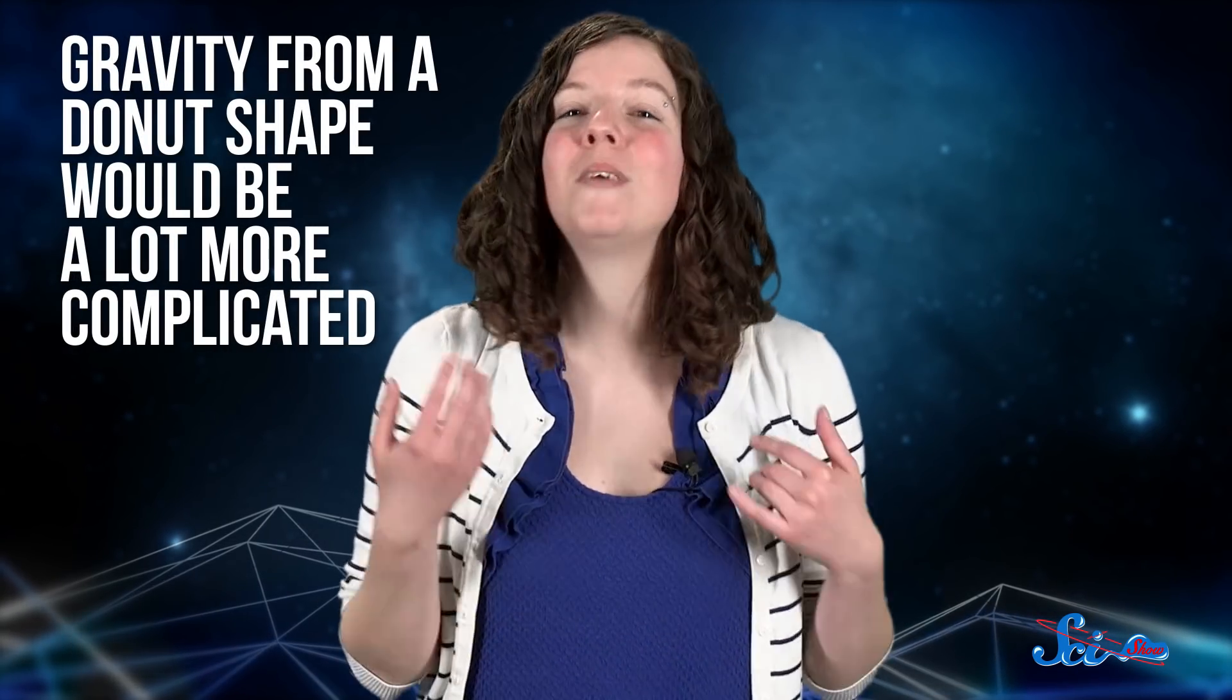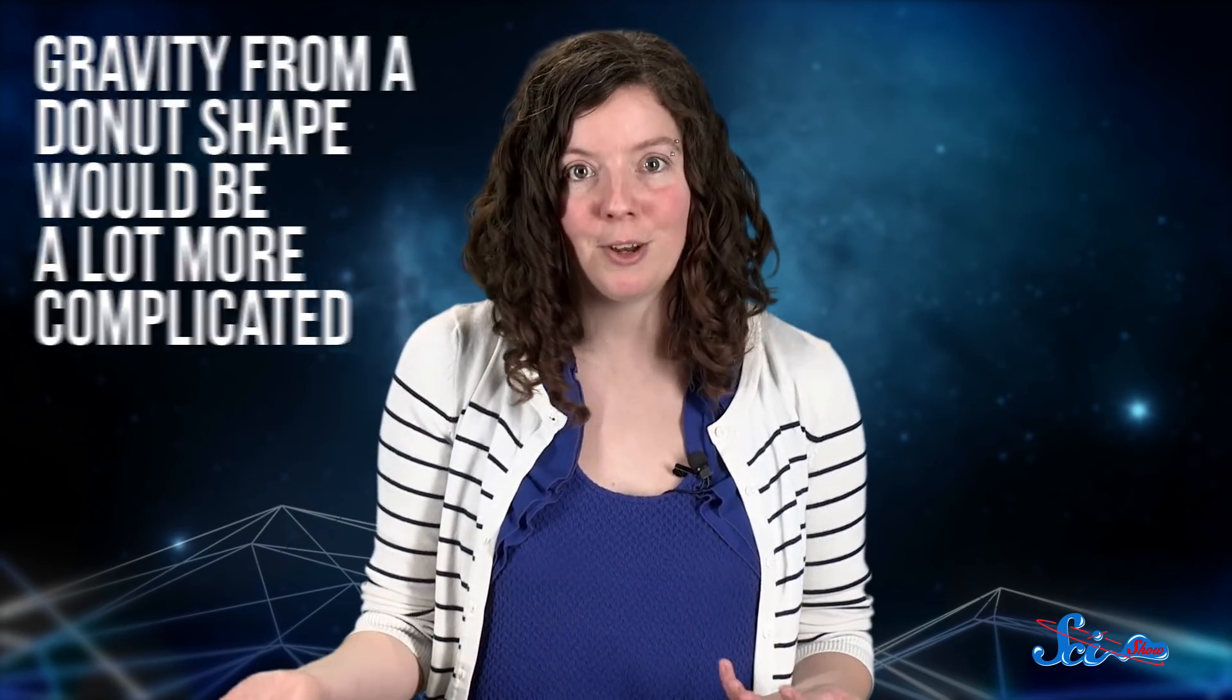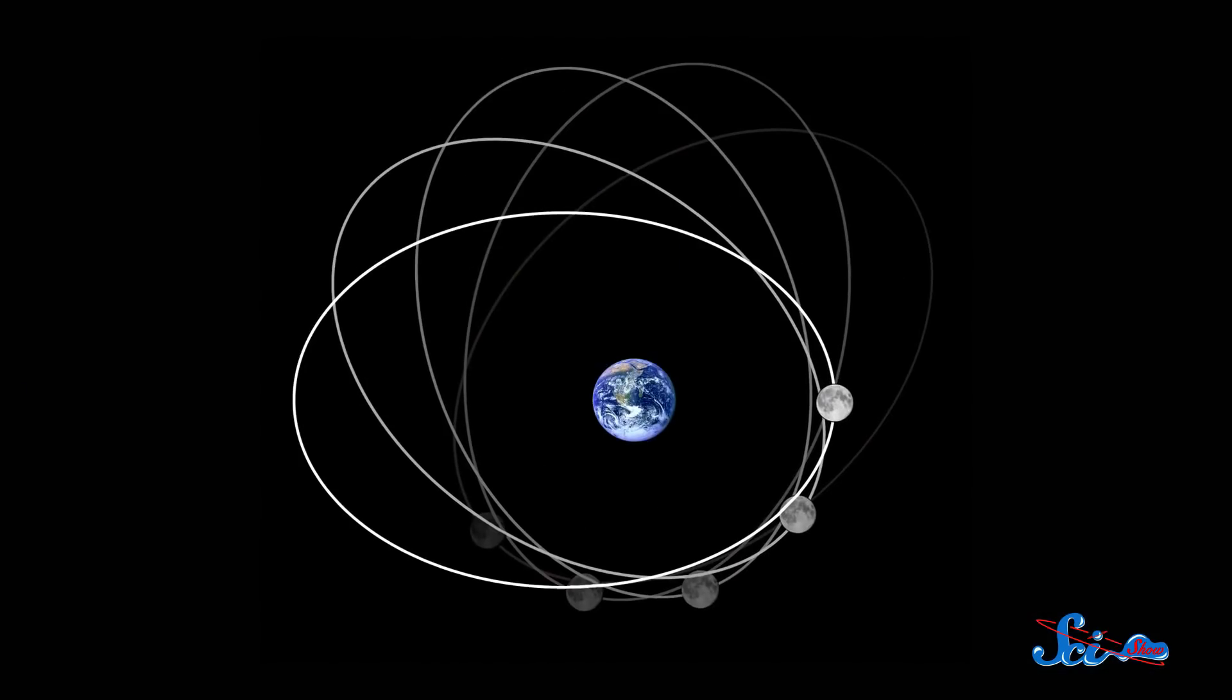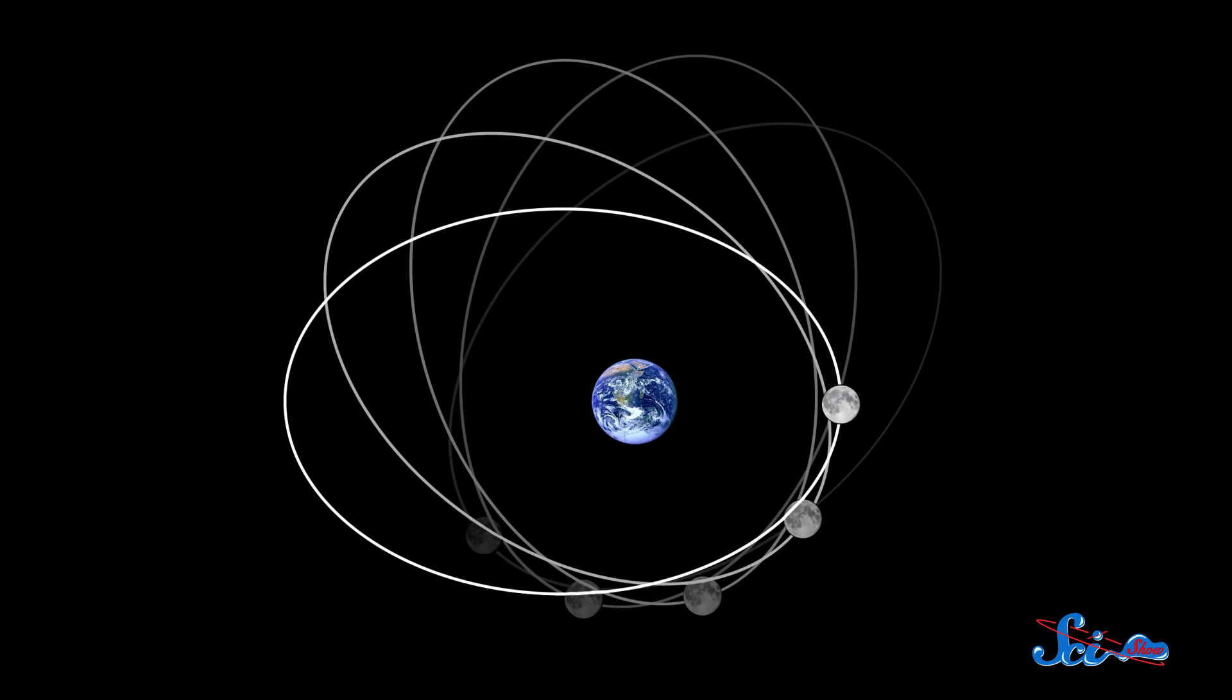Because gravity from a donut shape would be a lot more complicated than from a round little blob like Earth. The polarverse gravity is practically the same in every direction, so our moon can orbit in a relatively simple, well-balanced ellipse.